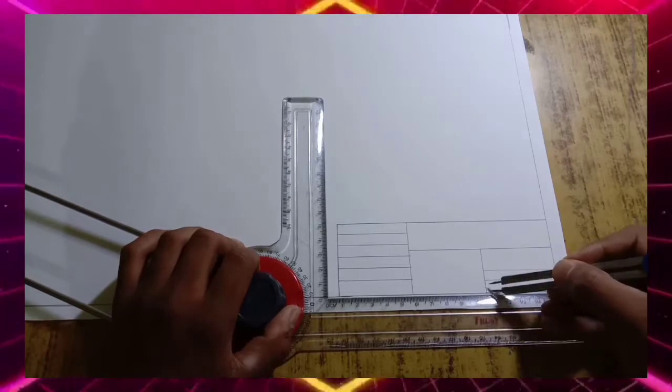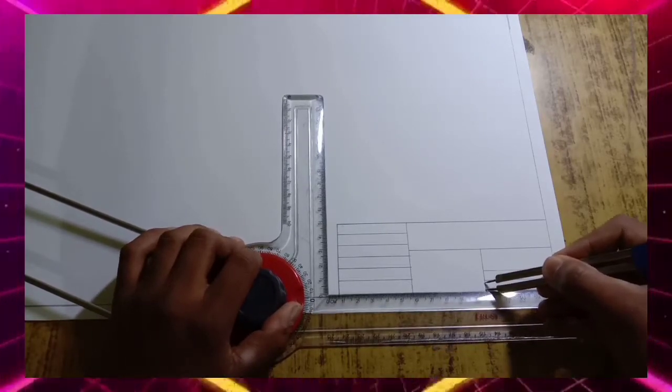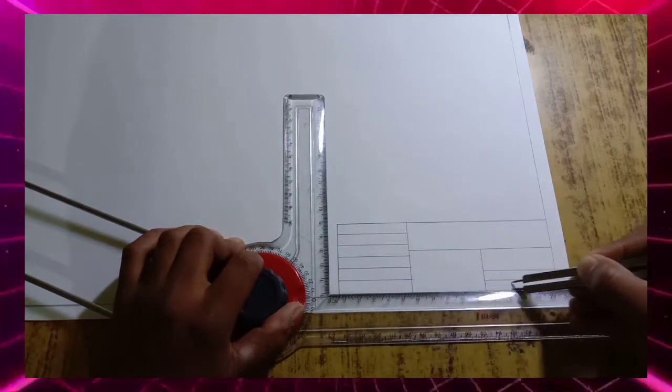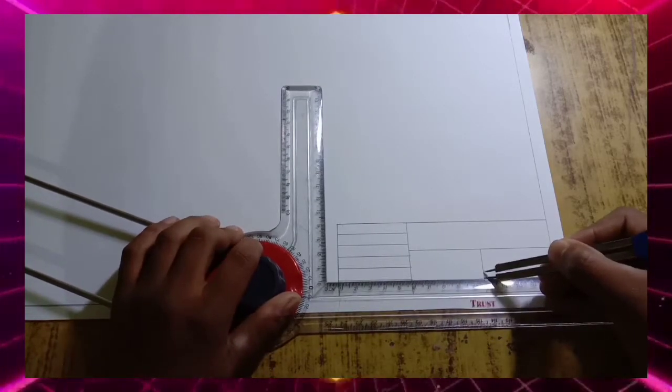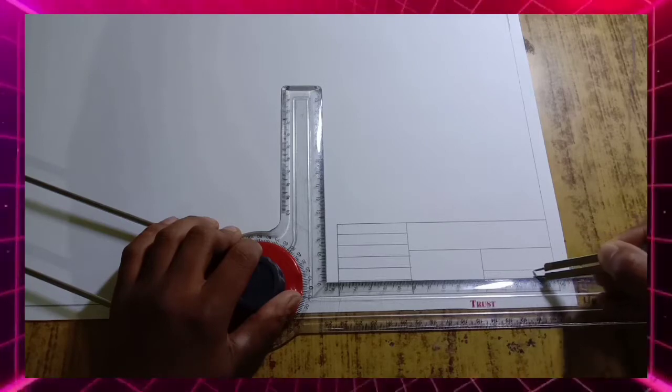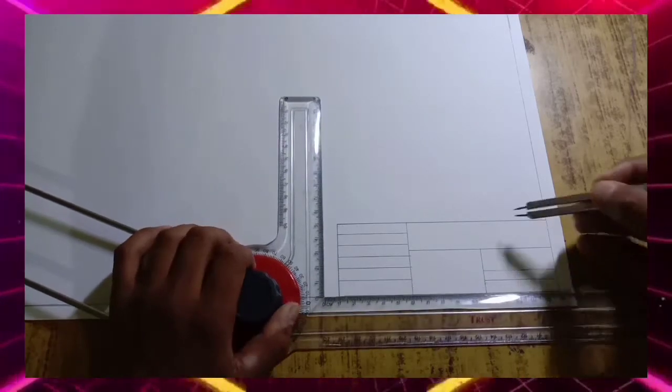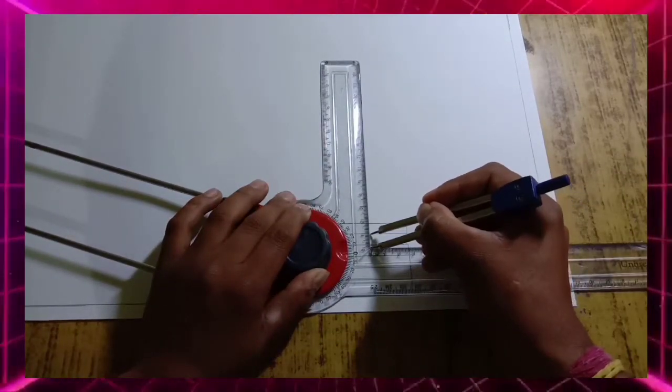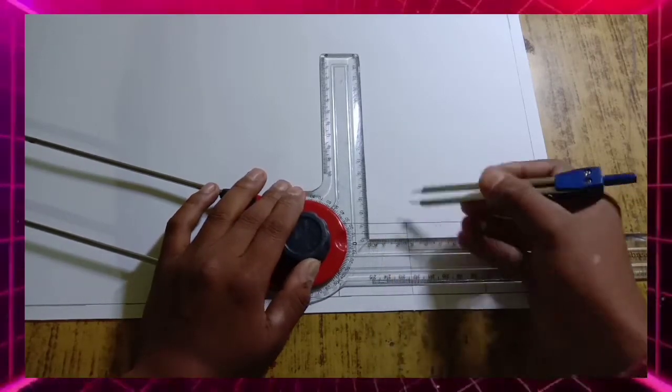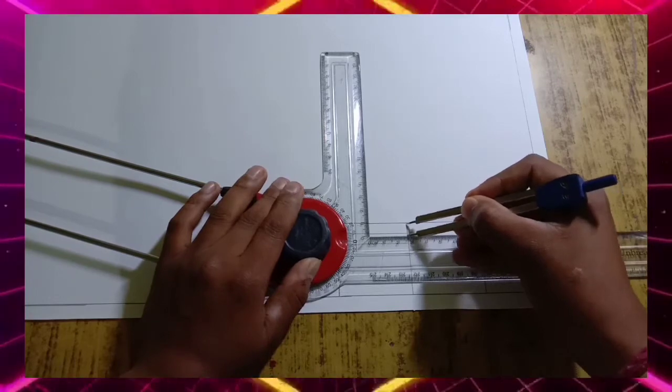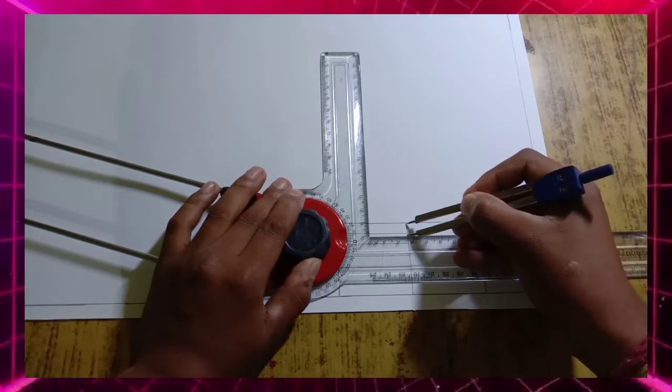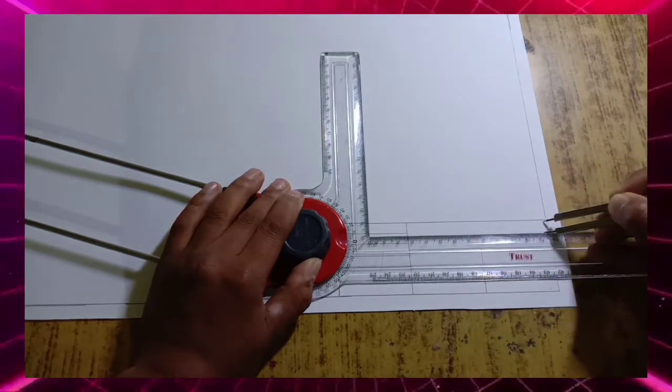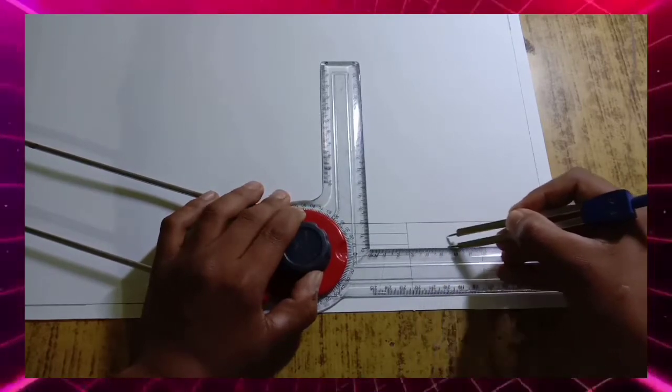You can adjust the size. You can take it 0.5 and draw the horizontal lines on both the boxes. In this box you can take 1 centimeter, or you can take 0.8 also. Like this, draw the two horizontal lines.